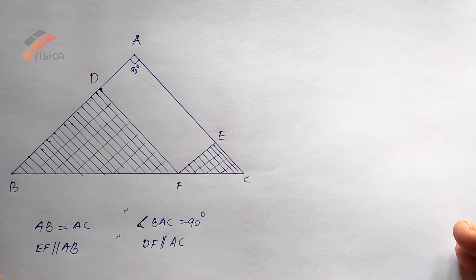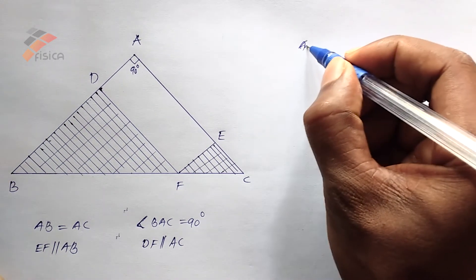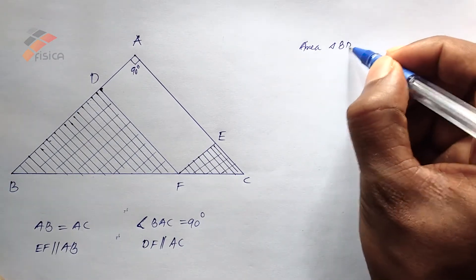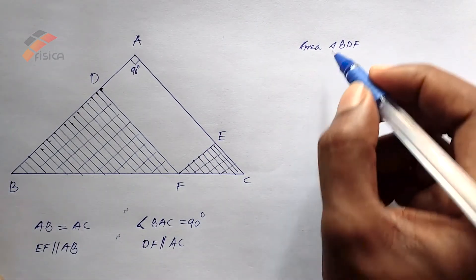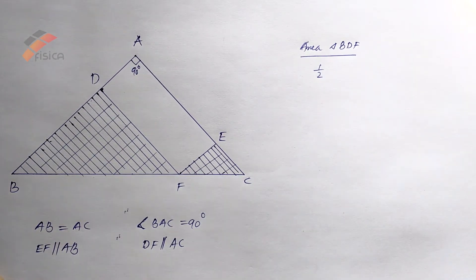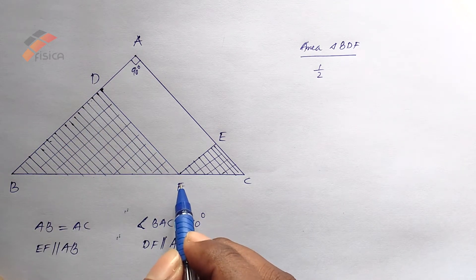You know how to find out the area of a triangle. Area of triangle BDF. Half into, here BD and DF have the same length.